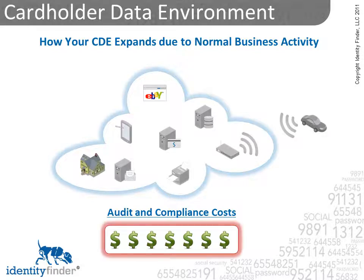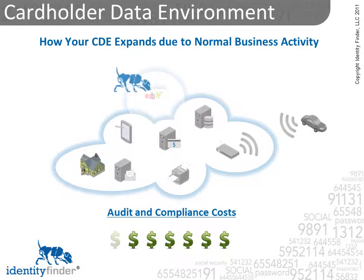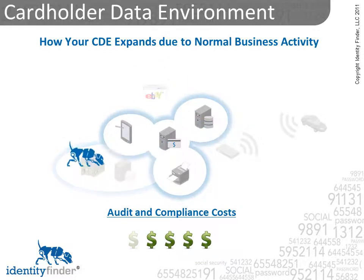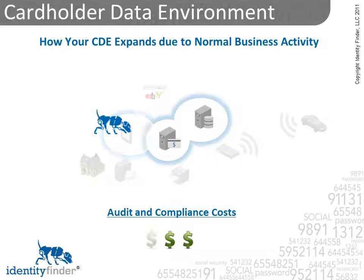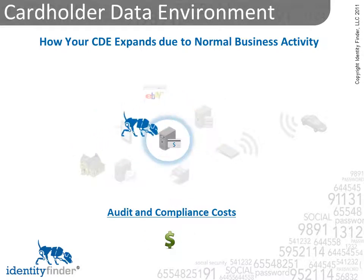The bigger your CDE, the bigger your audit and compliance costs. But if you get rid of PANs and clean up your business processes, you can shrink your audit and compliance costs. That's what we do at Identity Finder — we save you money on PA DSS audits and compliance by finding PCI data and minimizing where it's stored.